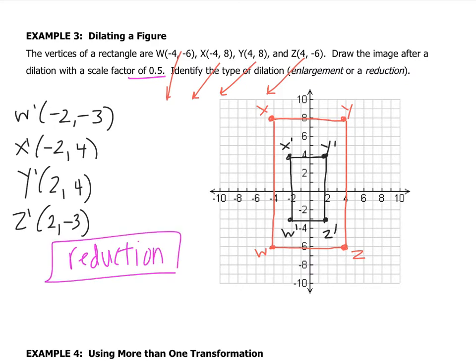When you're multiplying by a number that's greater than 1, your shape is going to get bigger, like it did in the last example. When you multiply by a number that is less than 1, it gets smaller, like it did in this example. So you can kind of go into the question, knowing whether it's going to be an enlargement or a reduction.